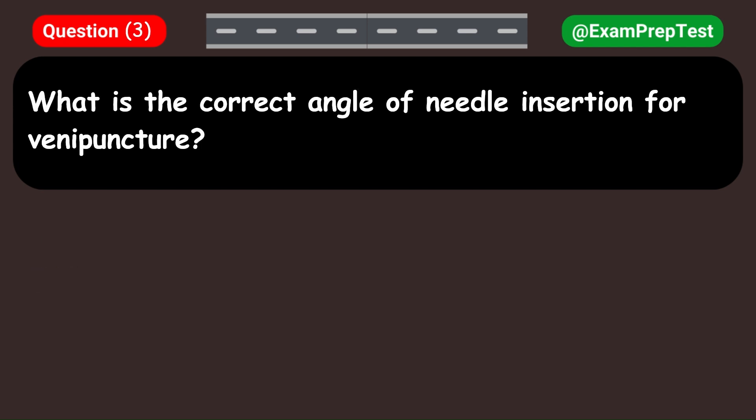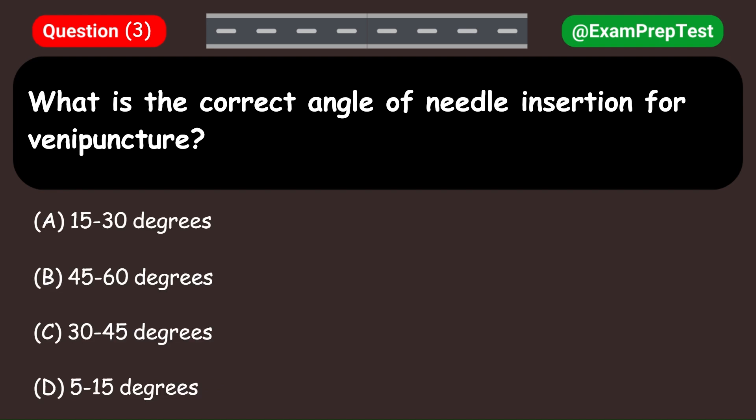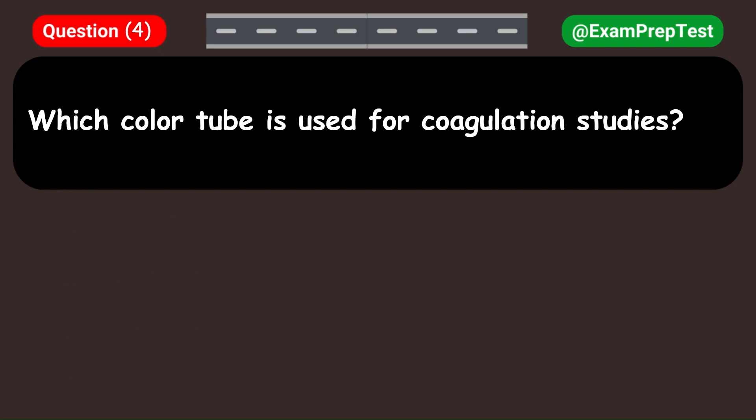What is the correct angle of needle insertion for venipuncture? A. 15 to 30 degrees. B. 45 to 60 degrees. C. 30 to 45 degrees. D. 5 to 15 degrees. Answer: A. 15 to 30 degrees.